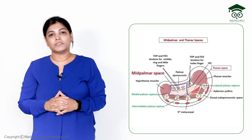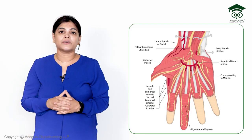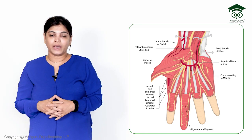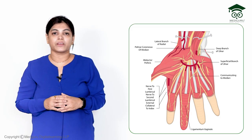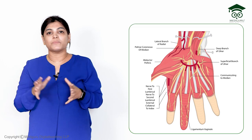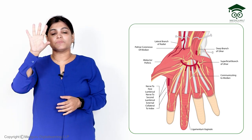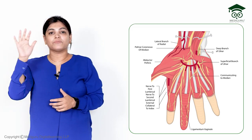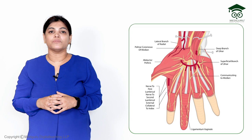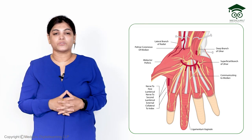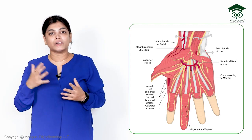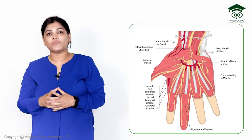The contents of the mid palmar space include the superficial palmar arch, which is a direct continuation of the ulnar artery — which joins a branch of the radial artery. Long flexor tendons are also contained within it.